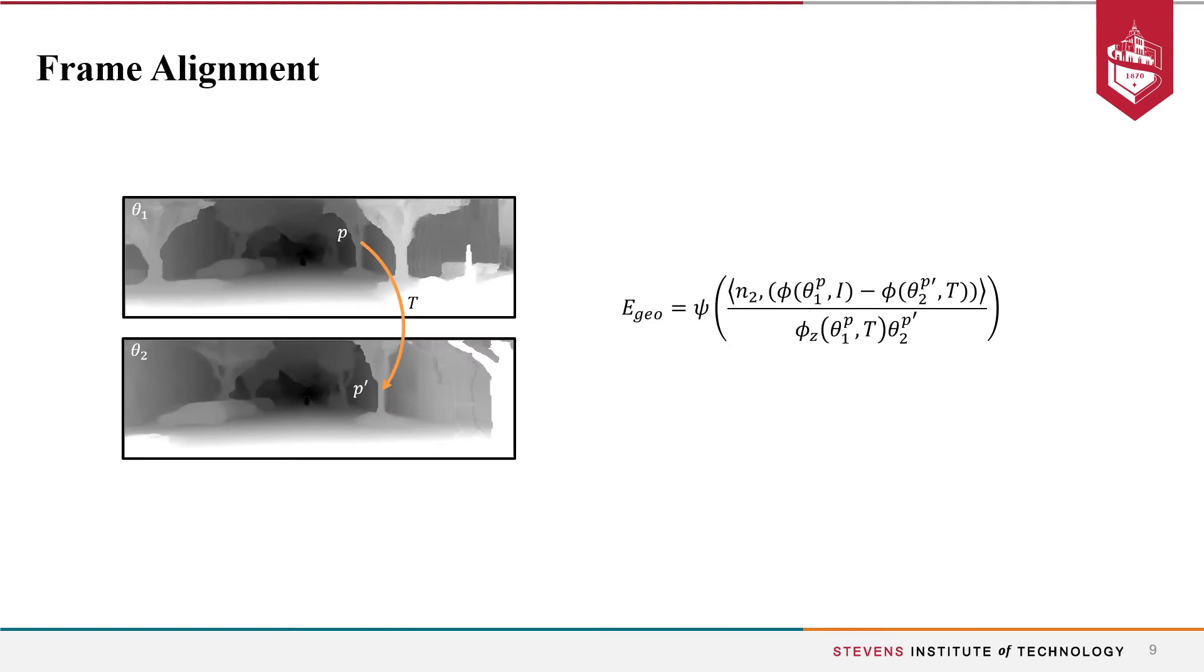For keyframe alignment, we adopt a depth map alignment framework, generalizing the point-to-plane error to account for inverse depth parameterization. This provides fast convergence speed and good robustness towards triangulated depth maps that can range to infinity.